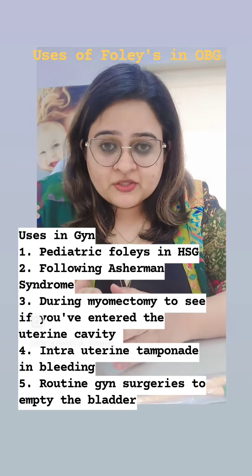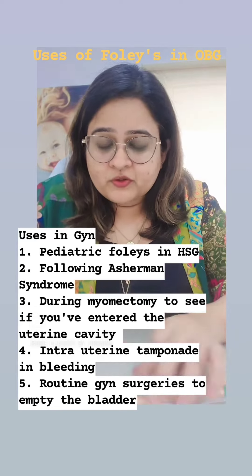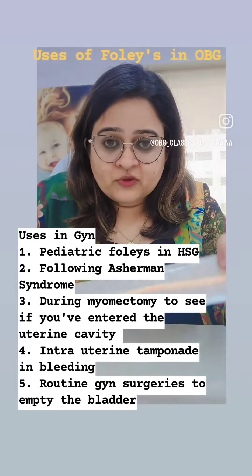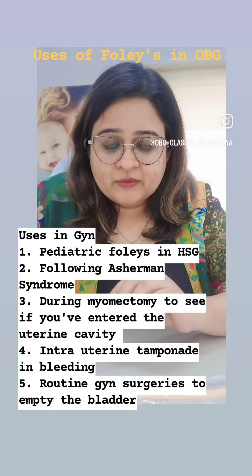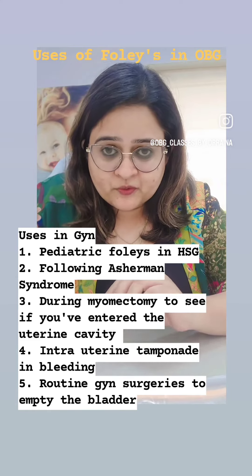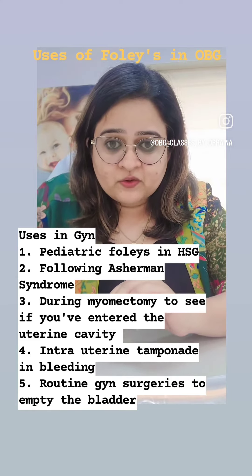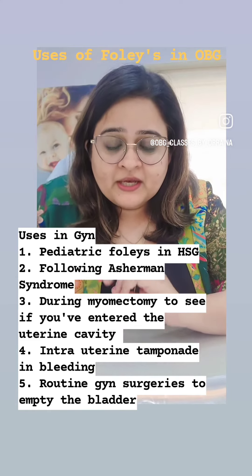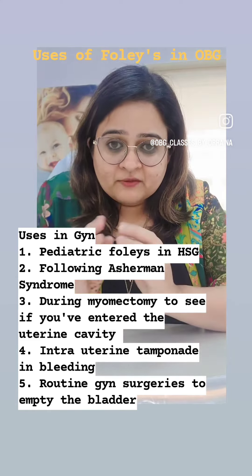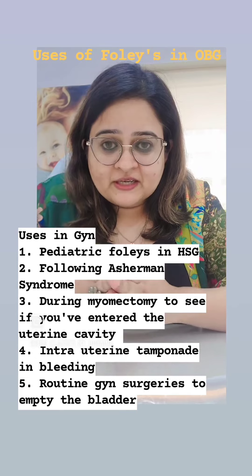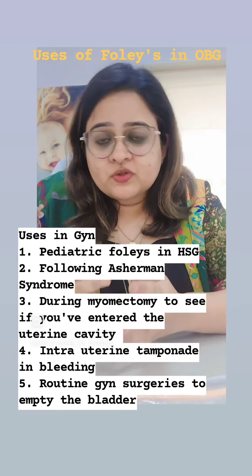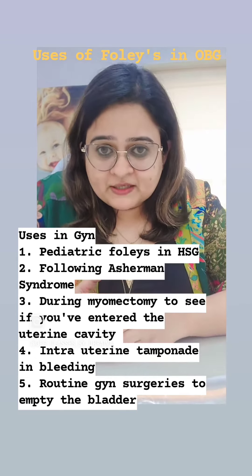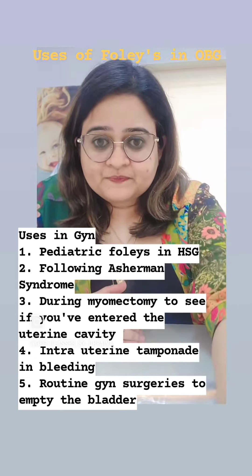Also, following Asherman's syndrome treatment, you can use a Foley's catheter inflated to 3 to 5 ml in the bulb with saline or water — this will prevent re-adhesions from forming. So these are the uses of Foley's catheter in obs and gynae.